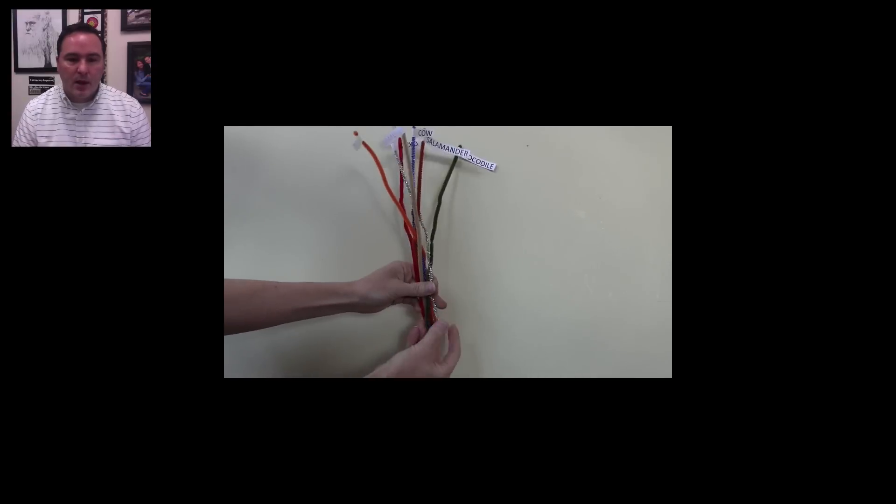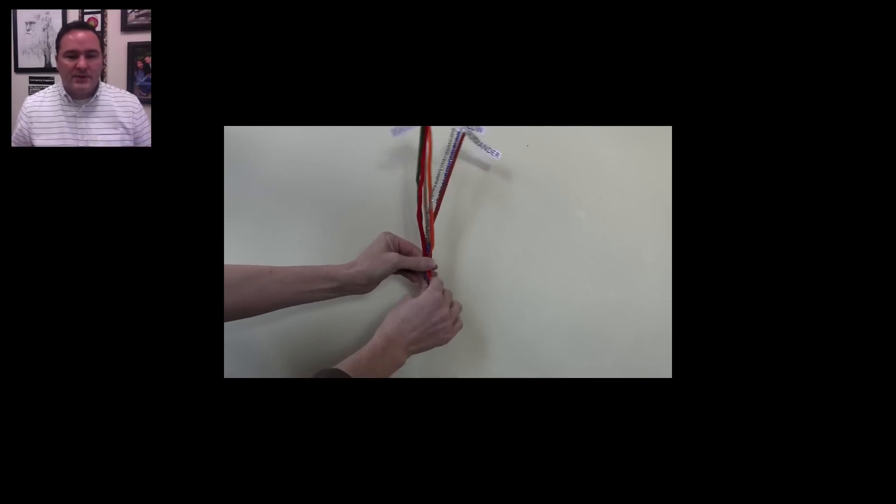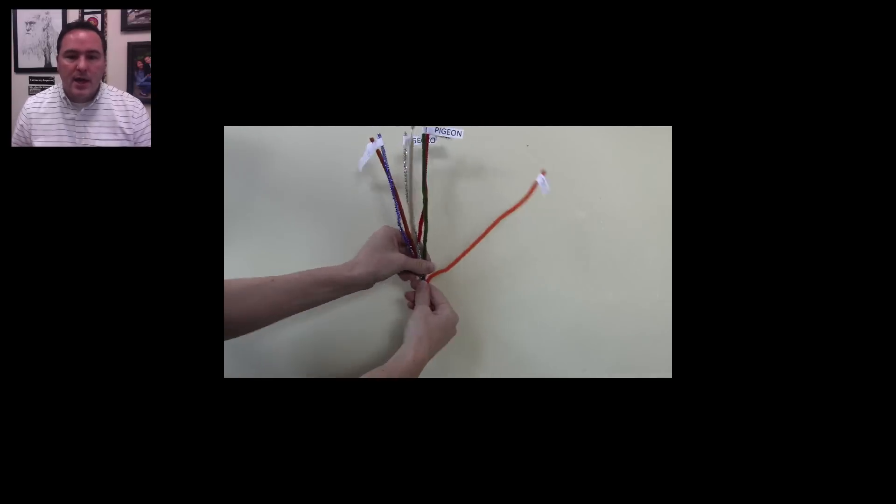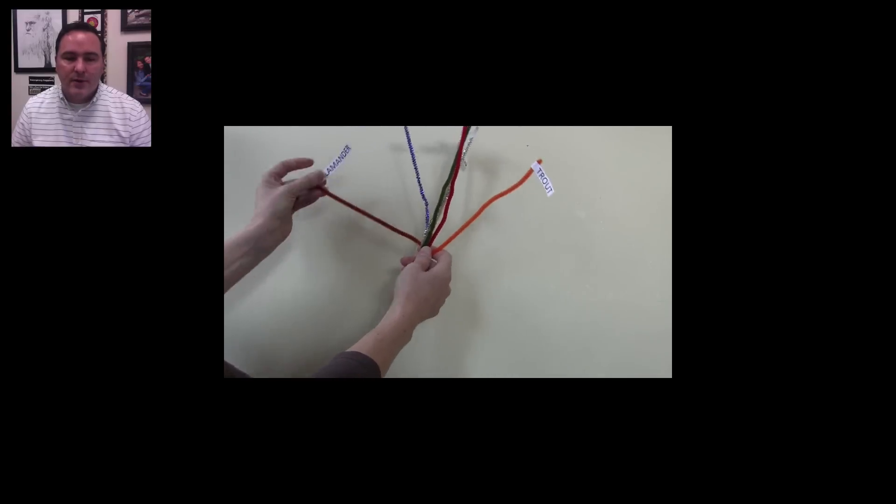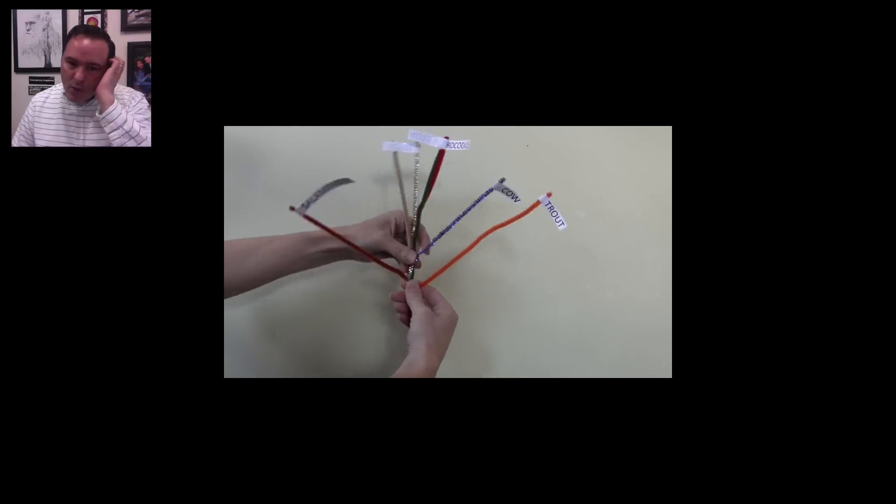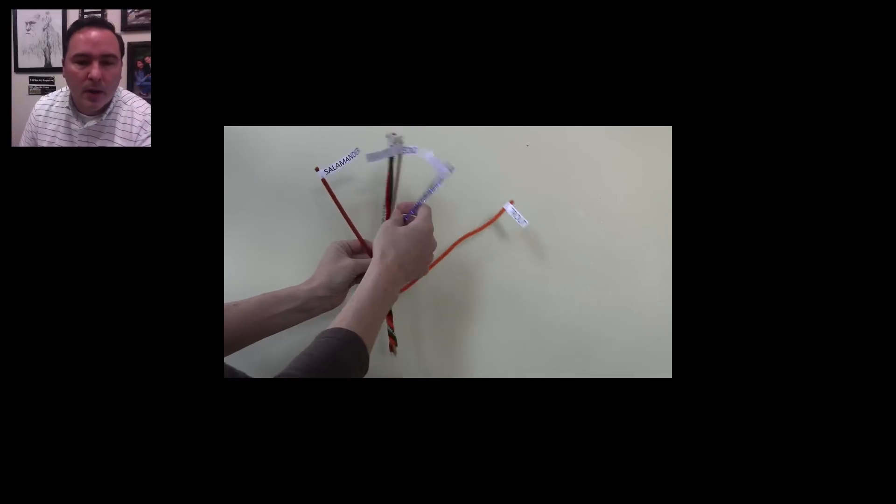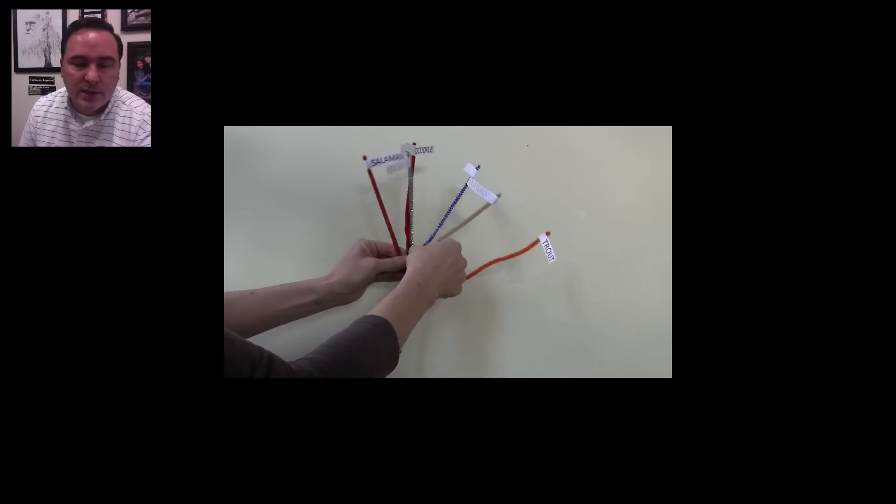We get them all twisted together, and that represents the common ancestor of all of these different organisms. And then we start to twist together the organisms that need to be twisted together based on the relationships and based on the shared characteristics.